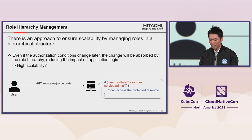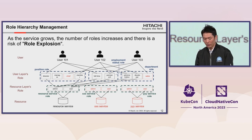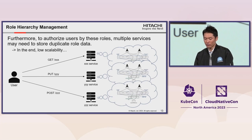This means authorization logic will be able to be separated from application logic, which seems like high scalability. However, as the service grows, the number of roles increases and there is a risk of role explosion. When role explosions occur, system performance is severely degraded. Furthermore, to authorize users by these roles, multiple services may need to store duplicate role data. In the end, this is still low scalability and not a scalable authorization implementation.